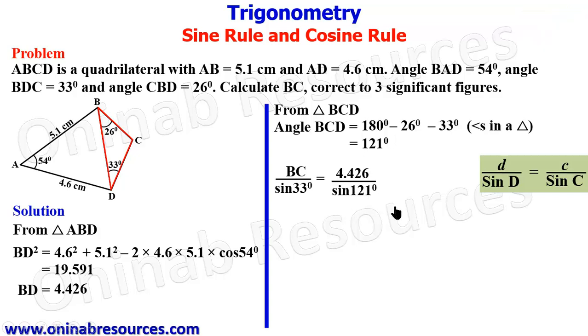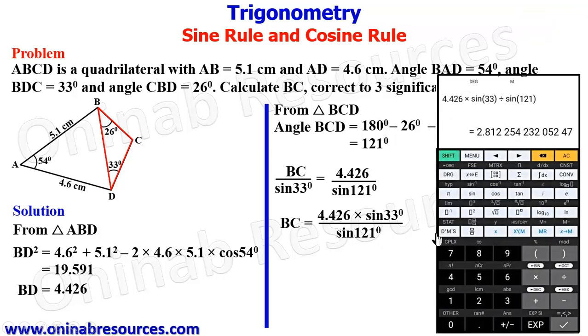We make BC the subject of the relation. That's going to give us 4.426 times sine 33 degrees divided by sine 121 degrees.